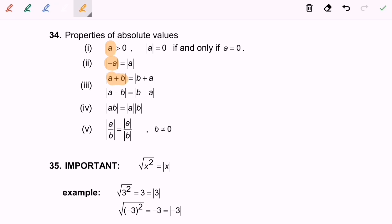Number four, modulus of a multiplied with b is equal to modulus a multiplied with modulus b. Number five, modulus of a over b is equal to modulus of a divided by modulus of b, where b cannot be equal to zero.